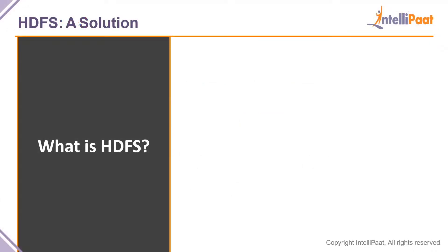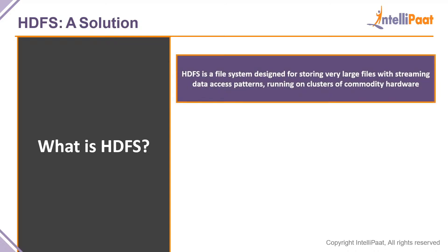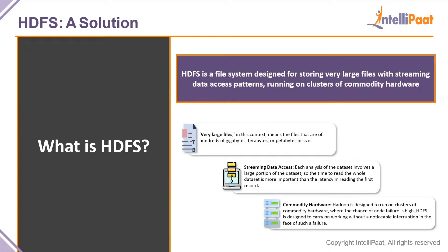We need to understand what HDFS is. HDFS is an abbreviation for the Hadoop Distributed File System, which is a file system designed for storing very large files with streaming data access patterns running on clusters of commodity hardware. HDFS is an implementation to solve the big data crisis by combining a lot of computers together. Commodity hardware means something that is not expensive — something that comes into use in day-to-day life — but it still solves the problem of big data.